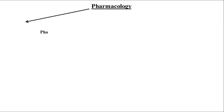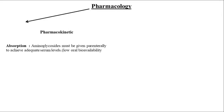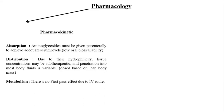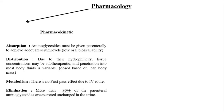Now let's talk about the pharmacology of gentamicin. First, pharmacokinetics — absorption: aminoglycosides are given parenterally because there is low oral bioavailability. Distribution: due to hydrophilicity, tissue concentration may be sub-therapeutic and depends on body fluids. The dose depends on lean body mass. There is no first-pass effect due to IV route, and 90% of the drug is excreted through the kidney unchanged.